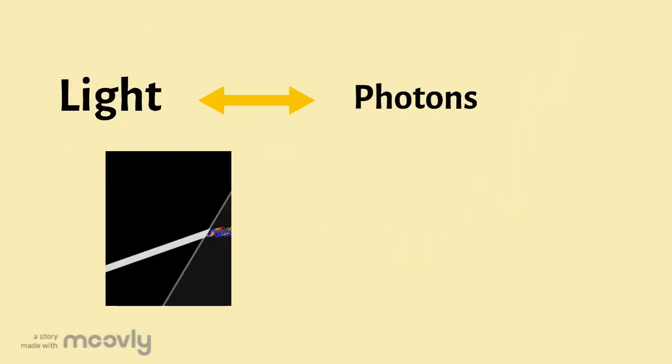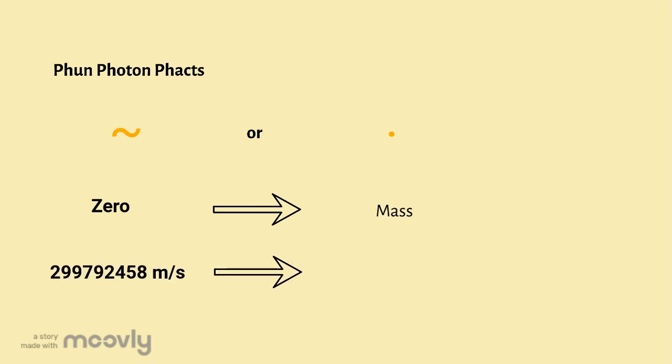Light is composed of photons. Photons are elementary particles subject to wave particle duality. This means that sometimes they act like waves and sometimes particles. Photons have zero mass and therefore photons and only photons can travel at the speed of light. Now we can see where the phrase the speed of light comes from.